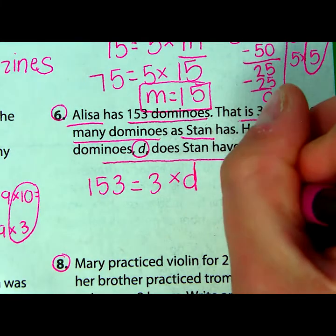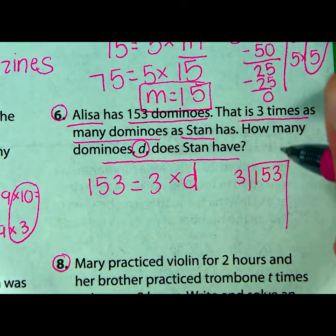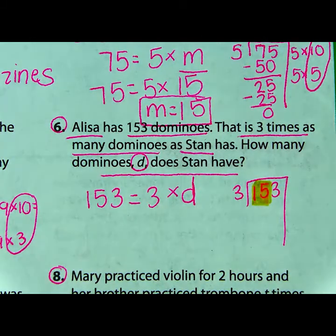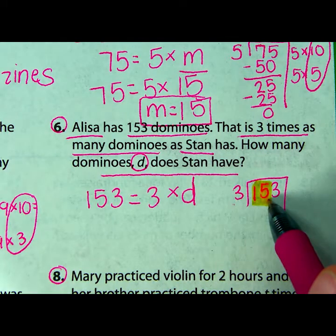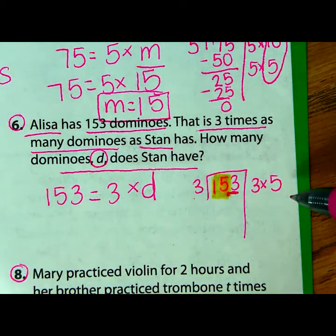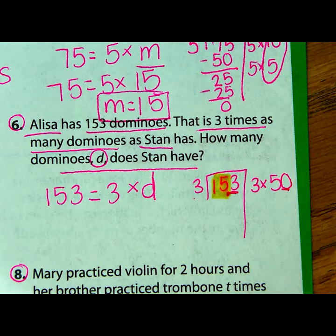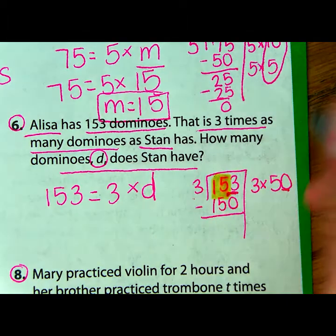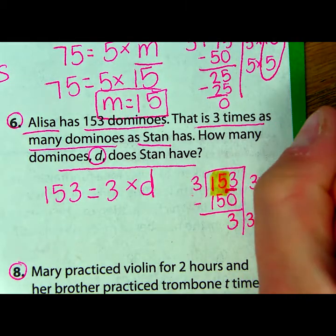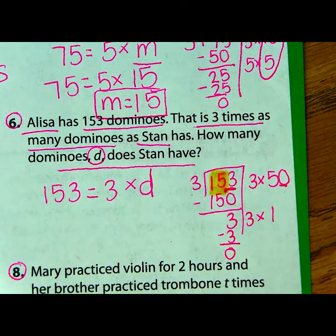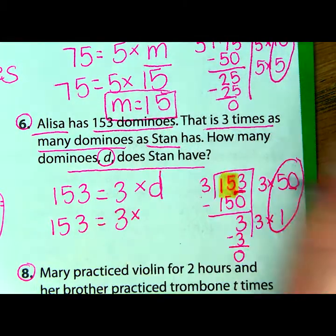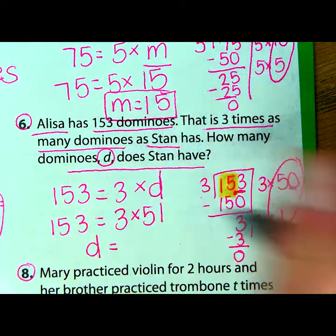I could use partial quotients. When you're using partial quotients, you really want to look at the first two numbers — looking at 15, how many times does three go into 15? Three times five is 15, but I have an extra number here. So instead of multiplying by five, I'm going to fill in that extra number with a zero: three times 50 would be 150. When I subtract, I'm left with three. Three times one is three — nothing remaining. Adding my partial quotients: 50 plus 1 means 153 is equal to three times 51. So Stan has 51 dominoes.